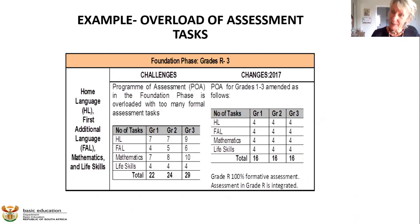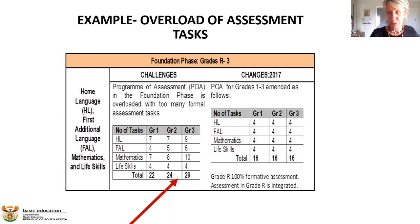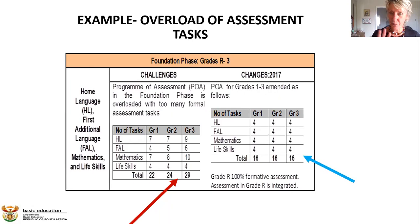This is another positive of the CAPS document and the task team — trying to deal with assessment overload. In home language, first additional language, mathematics, and life skills in grades one, two, and three, prior to the changes they had 22 assessments in grade one, 24 in grade two, and 29 in grade three — quite a lot for these learners. This was changed in 2017: they've got four in each of those grades, to a maximum of 16. For home language, first additional language, mathematics, and life skills — four per grade.